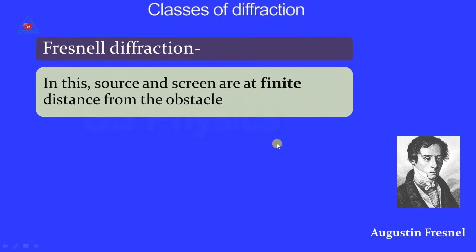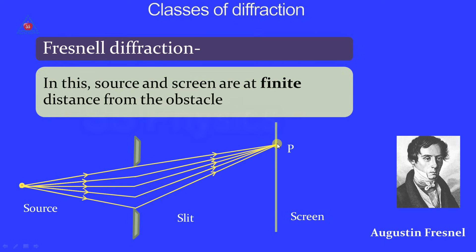The second type of diffraction is called Fresnel diffraction. In this, the source and the screen are at a finite distance from the obstacle. As shown in this figure, no biconvex lens is used, so you can perform this experiment anywhere. You will need a point source, a slit, and a screen. The source emits a spherical or sometimes cylindrical wavefront that is incident on the slit. The slit diffracts the rays, which converge at point P on the screen where you will see the diffraction pattern.